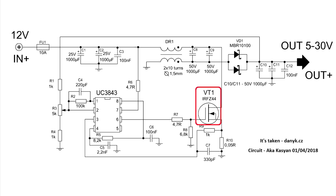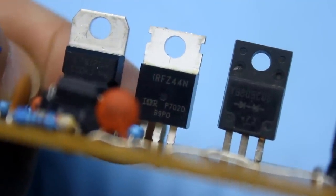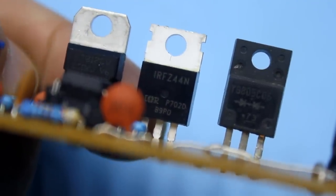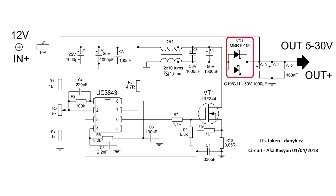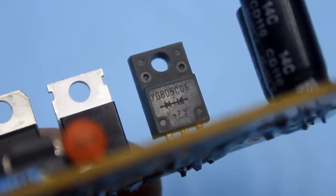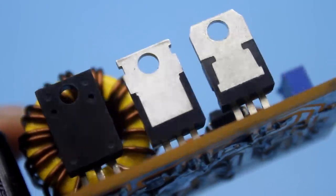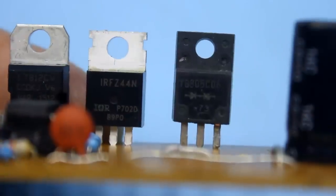The power transistor can be any low voltage N-channel field effect transistor with a current of 30 Amperes. In my case, the transistor IRFZ44 was used. The output rectifier is a dual diode in the TO220 package. It's very desirable to take Schottky diodes because they have a minimum voltage drop, hence minimal losses.